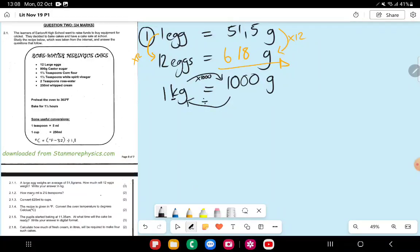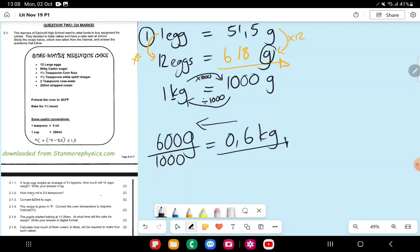You're going to say divide by 1000. Since I have grams, I'm going this way. So I'm going to say 600 grams, 618 grams divided by 1000 gives me a total of 0.6 kilograms of eggs.